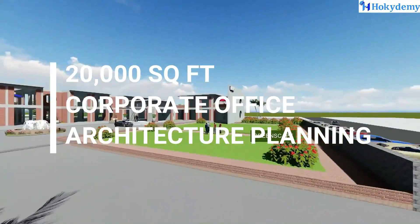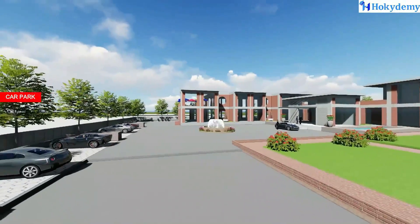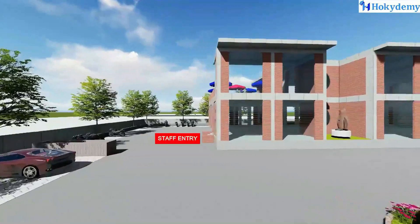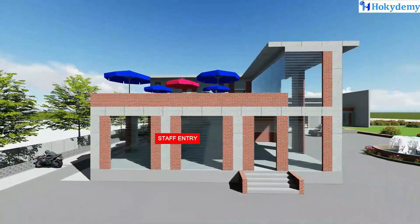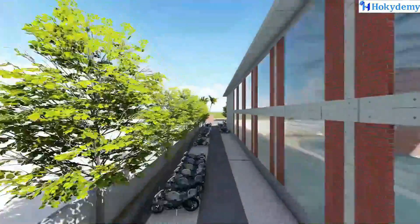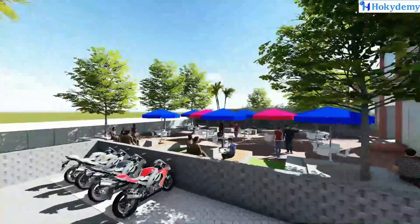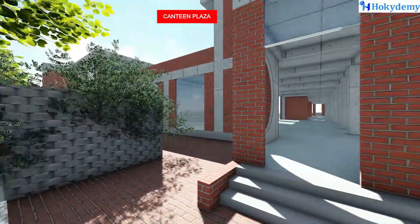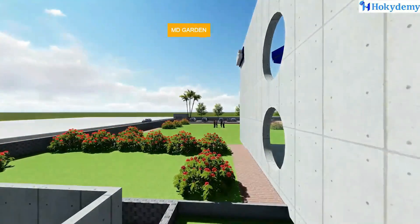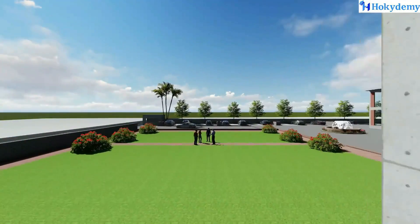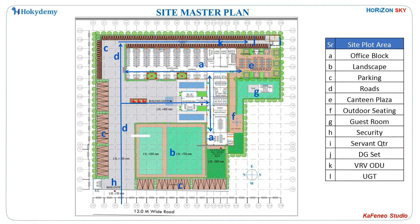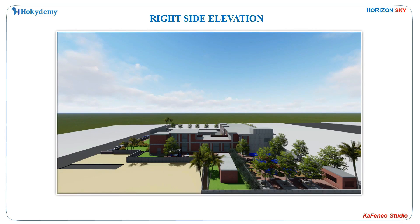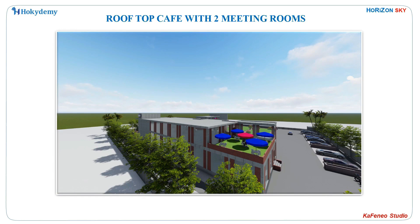Welcome to Hokidemi. In this course you will learn architecture elevation planning inspired by institutes like IMA and CEPT, using exposed bricks, exposed RCC, round windows, and open seating canteens. It covers master planning of a 20,000 square feet office and 60,000 square feet campus with office block, reception, MD and meeting block, canteen, plaza, guest rooms, and 12,000 square feet ground floor planning for 130 staff.